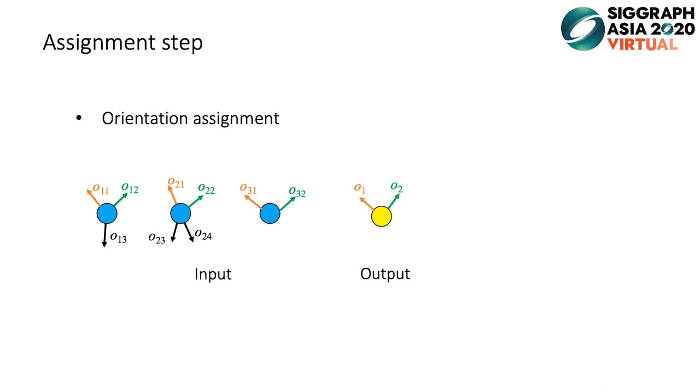For the orientation assignment, we also show an example of illustration. Here, the orientations are updated by averaging matched input orientations. The black output orientation is newly added by choosing the median from three unmatched orientations.